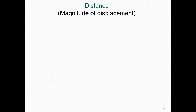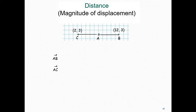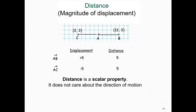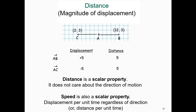Distance and displacement are not the same thing. Distance refers only to the magnitude of a displacement. Here we see two displacement vectors, AB and AC. The displacements between A and B and between A and C are different since they're in different directions. In contrast, the distance between A and B and the distance between A and C are the same. Distance is a scalar property — it does not care about the direction of motion. Speed is also a scalar property; it refers to the displacement per unit time regardless of direction, or distance per unit time.